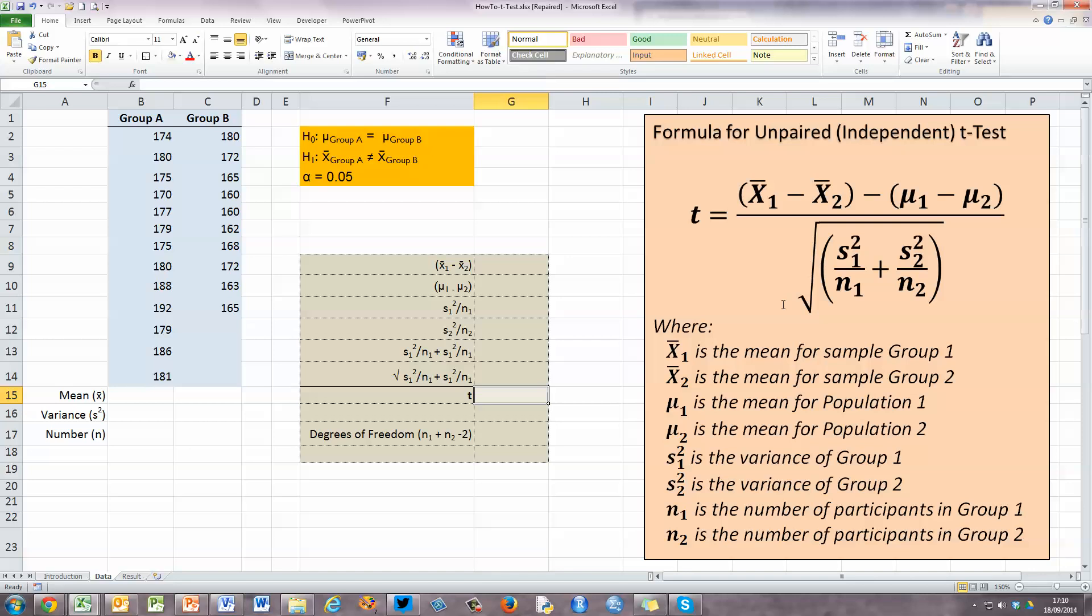So that's fairly straightforward, we need to be able to calculate those mean values. Now the denominator underneath, we take the square root of s₁² - well that's the variance of group 1, s₂² is the variance of group 2, and finally n₁ is the number of participants in group 1, and n₂ is the number of participants in group 2. So if we calculate each of these individual values, we can plug them into the formula to get our value of t.